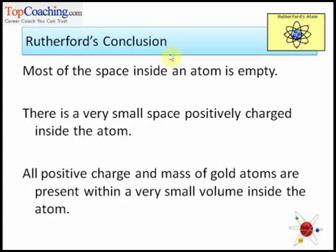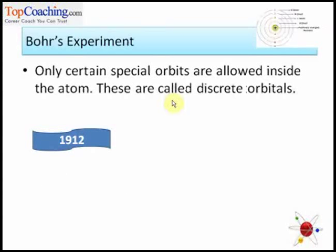Bohr gave some postulates to explain the stability of the atom. According to Bohr, only certain orbitals are allowed inside the atom and these orbitals are called discrete orbitals.